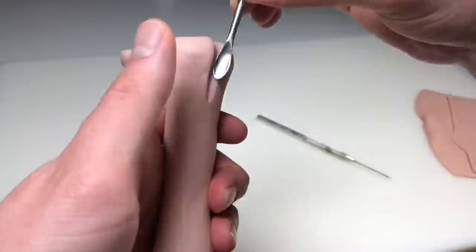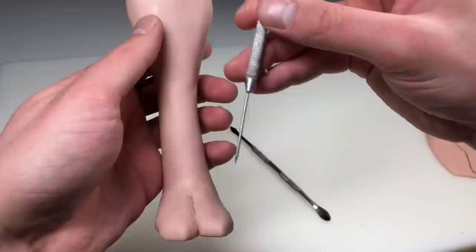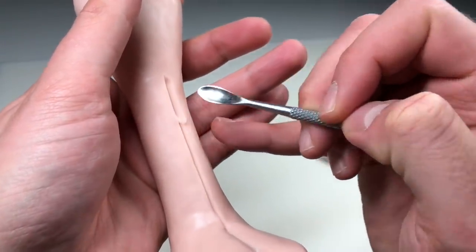After marking out the initial separation with my pen tool, I'm just going in with my spoon tool to create a sort of wedge that will give them more of a separate look and feel.